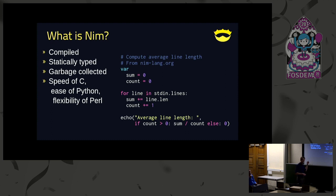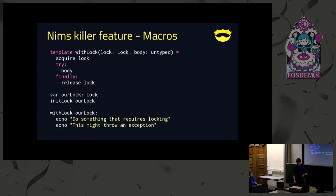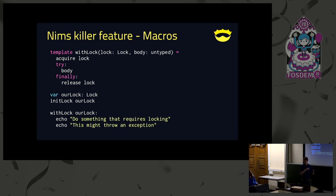I include here a quote: the speed of C, ease of Python, and flexibility of Perl. I thought this was something that Andreas, the creator of NIM, said — apparently not, and now I've seen it attributed to me in other presentations. Maybe the most killer feature of NIM is metaprogramming, the strongest kind of which is macros. Dominic is going to talk more on this later today, so go see his talk as well.